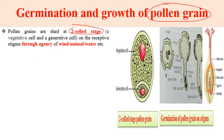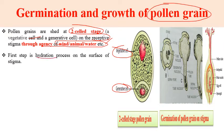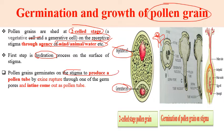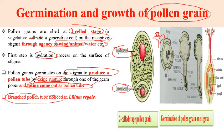The first step is germination and growth of the pollen grain. Pollen grains are shed at the two-cell stage - that is, vegetative cell and generative cell. Pollen grains reach the receptive stigma through the agency of wind, animal, water, etc. In the first step there is a hydration process: the pollen grain lands on the stigmatic surface, absorbs water, and swells up. The intine comes out in the form of a pollen tube through exine rupture through one of the germ pores.